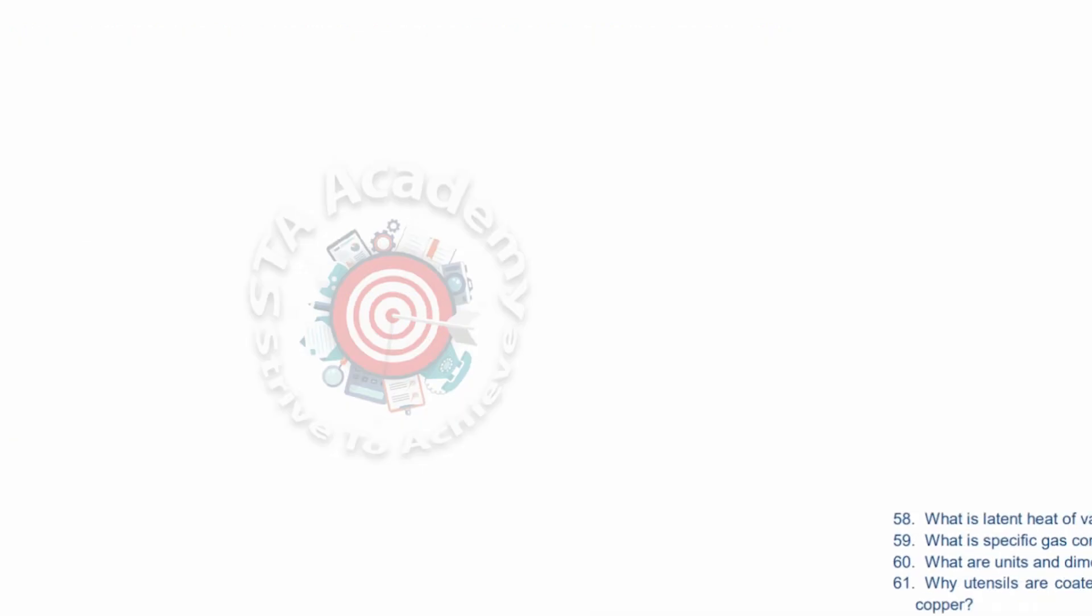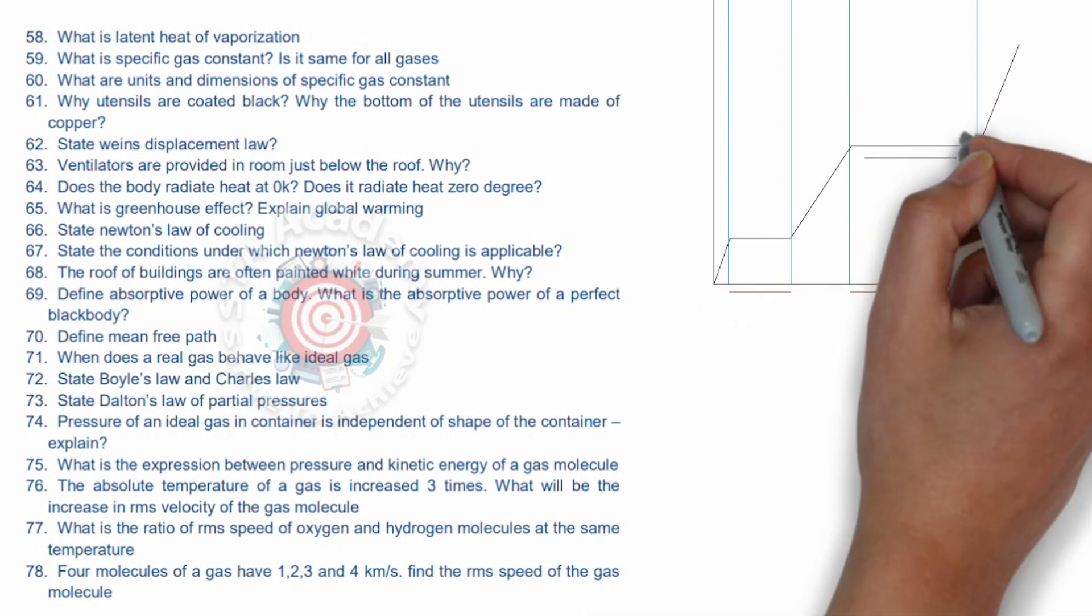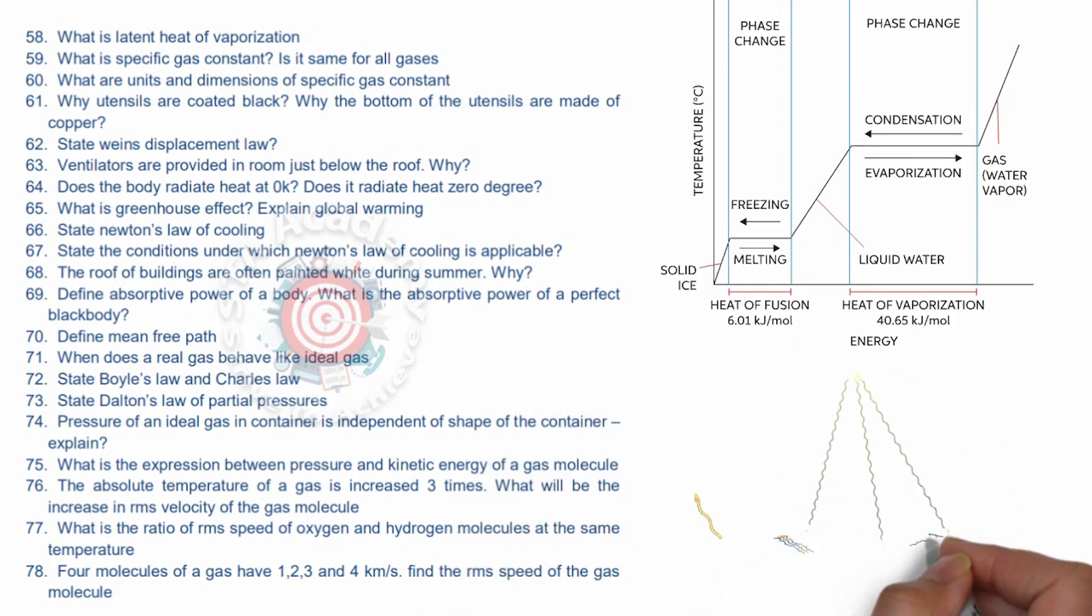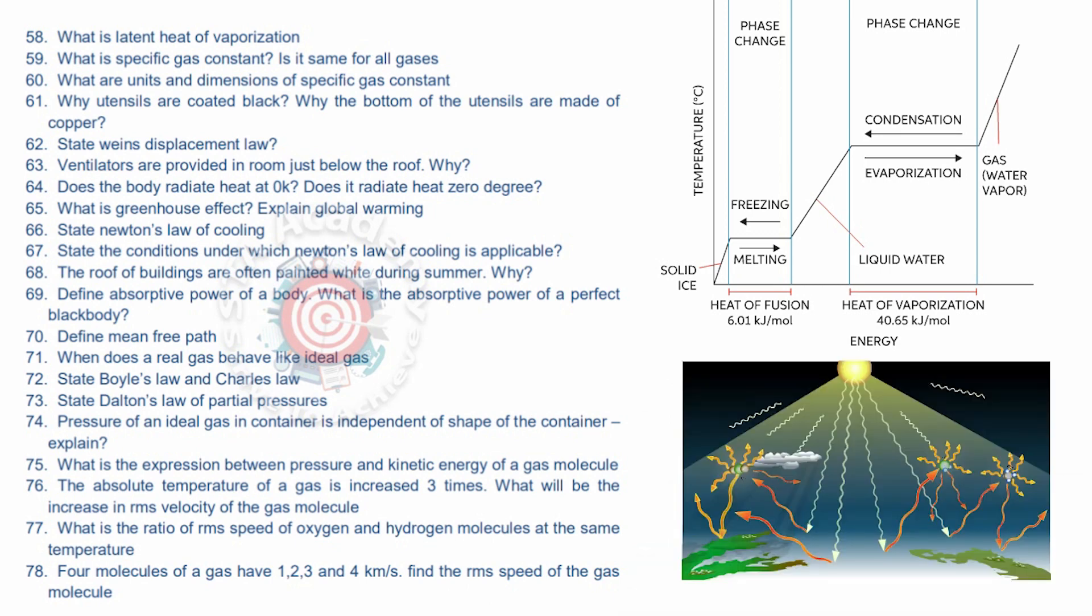Fifty-eighth: latent heat of vaporization. Fifty-nine: specific gas constant. Very important numerical questions. Sixty: units and dimension of specific gas constant. Sixty-one: very important VSAQ, why utensils are coated black? Why the bottom of the utensils are made up of copper? Sixty-two is state Wien's displacement law. Sixty-three: ventilators are provided in room just below the roof. Sixty-four: does the body radiate heat at zero Kelvin? Does it radiate heat at zero degree? Sixty-five question is what is greenhouse effect? Explain global warming. Sixty-six is state Newton's law of cooling. Sixty-seven: state the condition under which Newton's law of cooling is applicable. Sixty-eight, sixty-nine, seventy, seventy-one up to seventy-eight. Seventy-eight is a numerical problem.